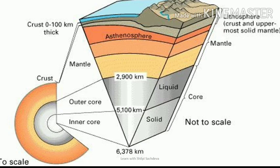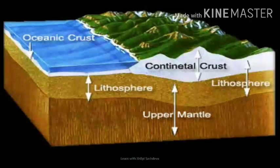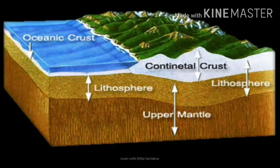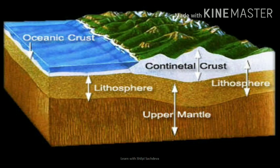Thus, we can say the crust or the lithosphere is divided into two types: oceanic crust and continental crust. The vast area of water surrounding the land masses on the earth are called oceans. All these oceans are interconnected and the level of water remains the same everywhere. This level of water is called sea level, and the height or depth of any point on the lithosphere is measured with reference to this sea level.